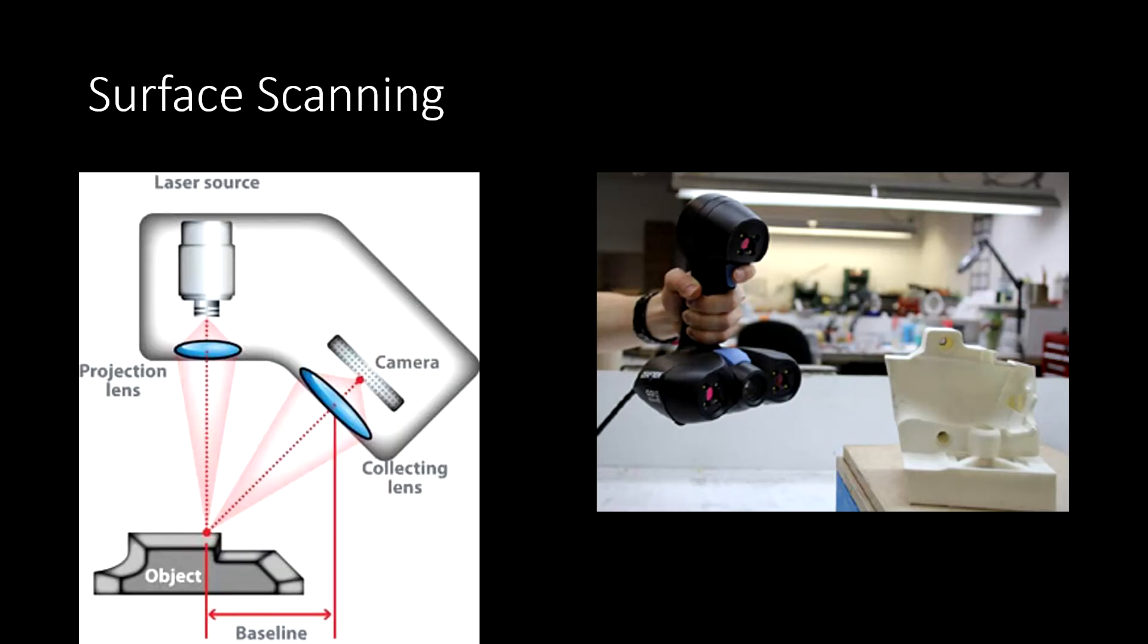Surface scanning essentially works by using a laser to measure the morphology of an object. The raw data for this is a point cloud of the surface of the object that is then used to create the 3D digital representation.